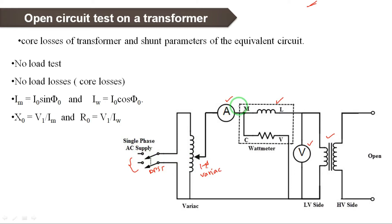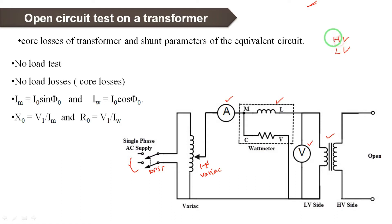Coming to the point: for the open circuit test of a transformer, the LV winding is connected to the supply while the other winding is kept on open circuit. Practically there are two windings — HV winding and LV winding, also called primary and secondary winding. The primary winding is connected to the source; the secondary winding is connected to the load.